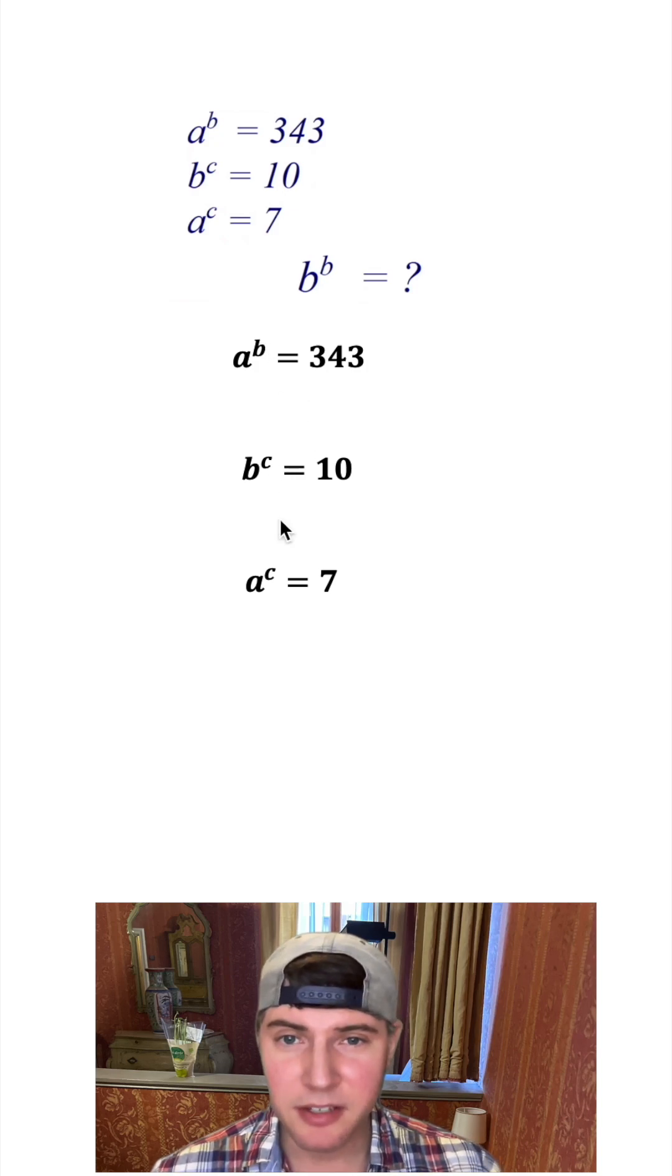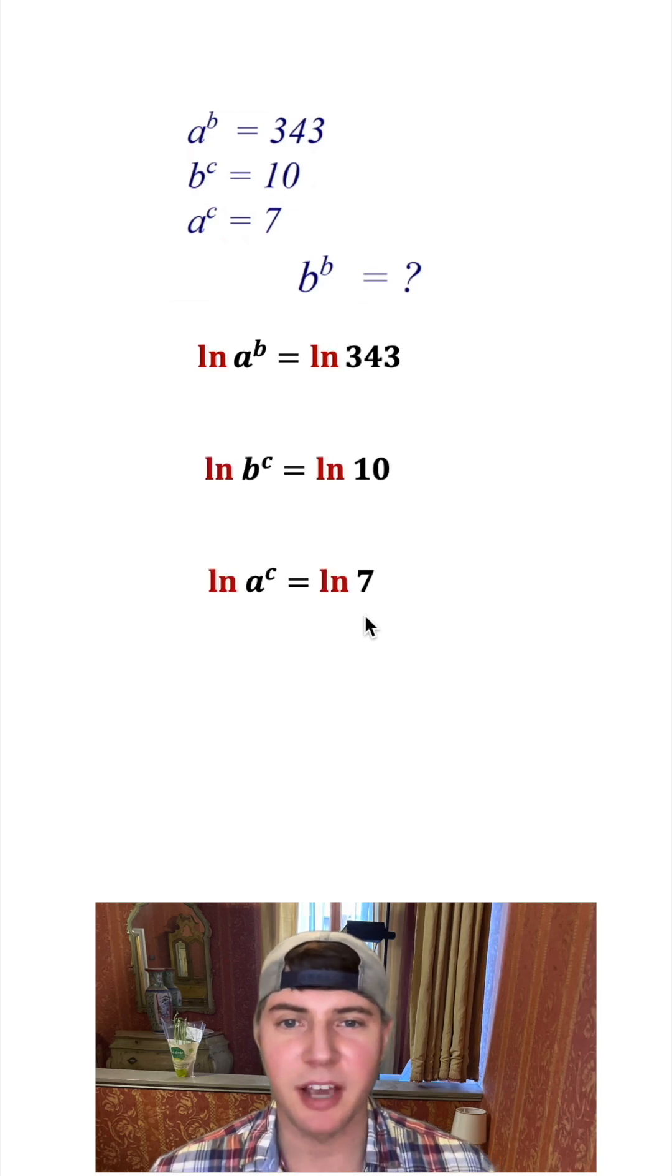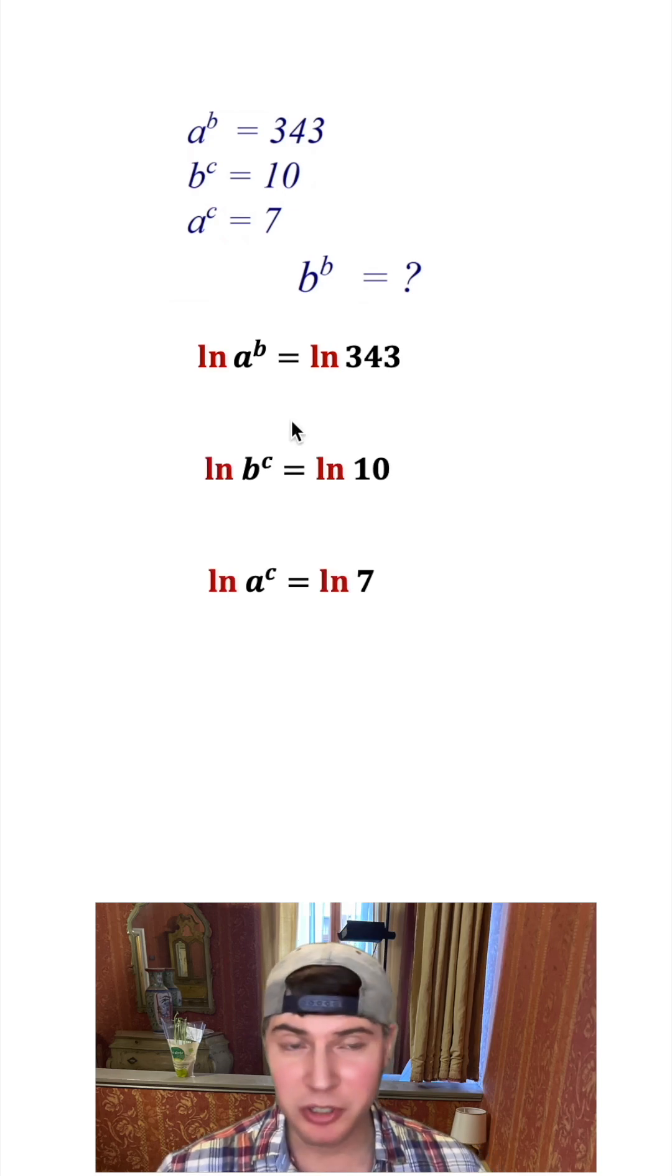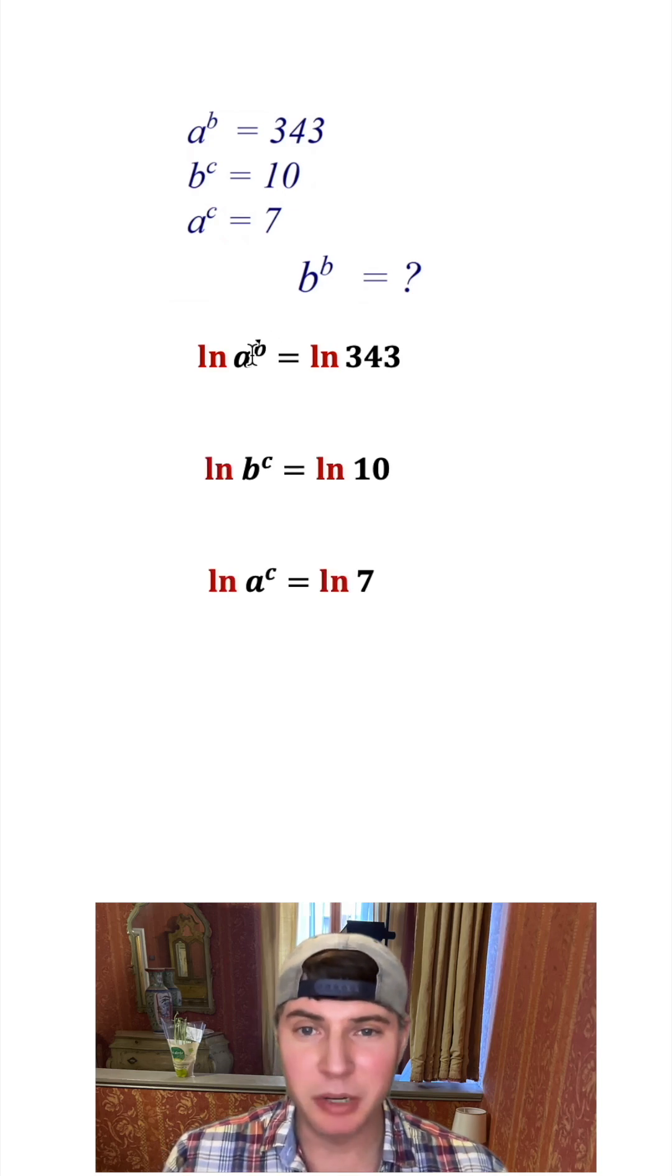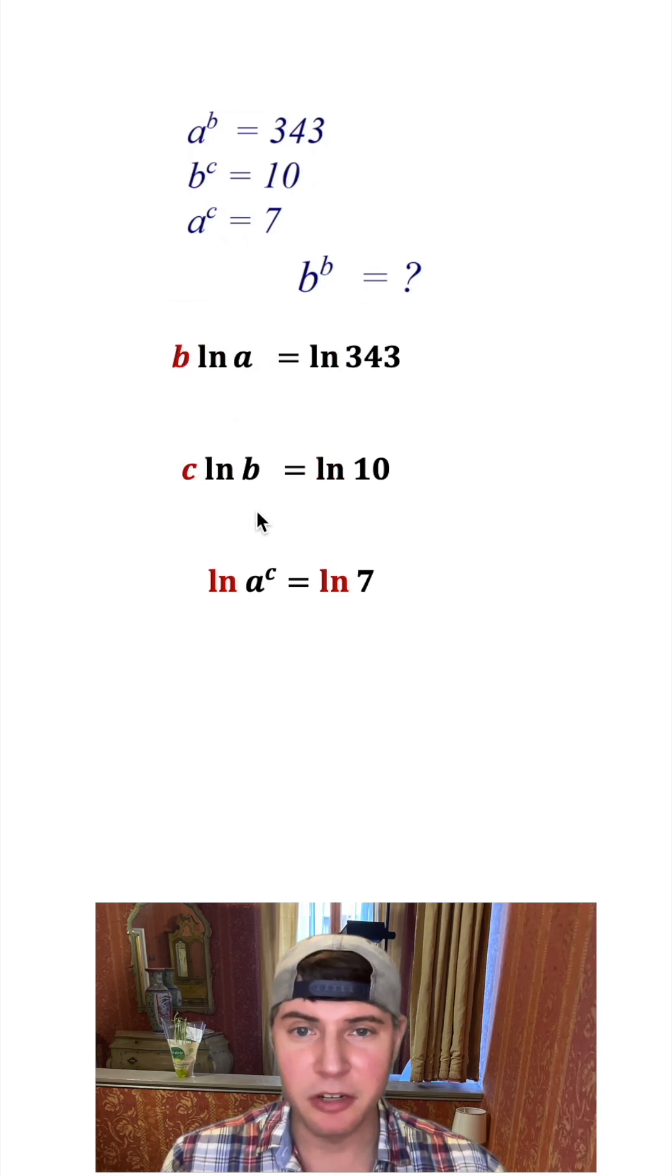So first, I want to get rid of the b's and c's in the exponent. So the way you do that is you use logarithms. So I'm going to take the log of both sides of all three of these. So one of the most important properties of logarithms says that we can bring this exponent to the front, and we can do that for all three of these.